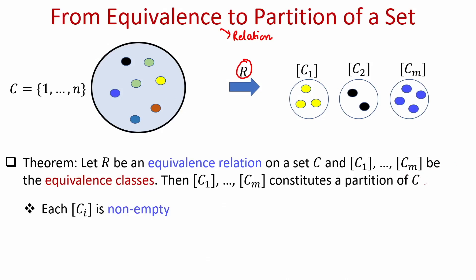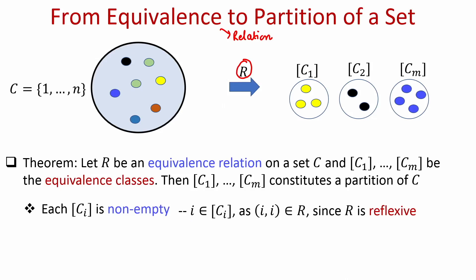Just to recall, the definition of partition demands me to prove three properties. The first property is that each subset should be non-empty, and that is trivial because each equivalence class is bound to have at least one element — namely the equivalence class of element i will definitely contain element i itself, since the relation R is reflexive and therefore i is related to itself. So none of these equivalence classes will be an empty set, and the first requirement is satisfied.